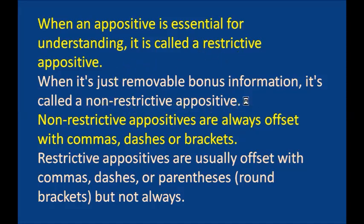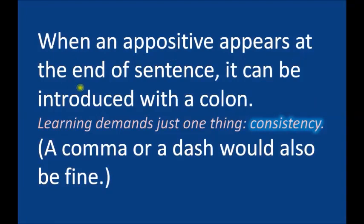When an appositive appears at the end of a sentence, it can be introduced with a colon. For example: 'Learning demands just one thing: consistency.' A comma or a dash would also be fine in this position — whichever punctuation you choose works when the appositive comes at the end of a sentence.